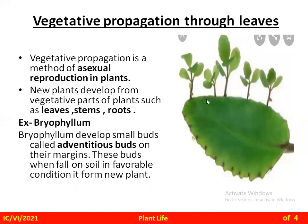Next is vegetative propagation through leaves. Vegetative propagation is a method of asexual reproduction in plants, where new plants develop from vegetative parts such as leaves, stems, or roots. The example is Bryophyllum. Bryophyllum develops small buds called adventitious buds on their leaf margins. When these buds fall on soil in favorable conditions, they form a new plant.